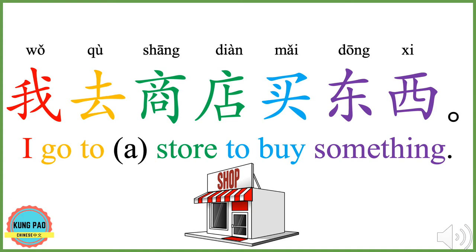我去商店买东西。 我 means I. 去 means go to. 商店 means store or shop. 买 means to buy. 东西 means thing. 我去商店买东西 means I go to a store to buy something. Now your turn.